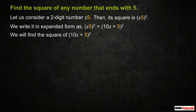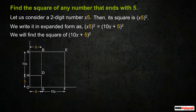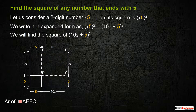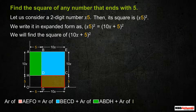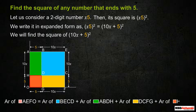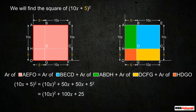We will find the square of (10x + 5) by drawing a square of length (5 + 10x). We find the area of square AEFO by drawing square HDGO of length 5, rectangle ABDH of 5 by 10x, rectangle DCFG of 10x by 5, and square BECD of length 10x. The area of square AEFO equals the area of BECD plus area of ABDH plus area of DCFG plus area of HDGO, giving 10x² + 50x + 50x + 5².